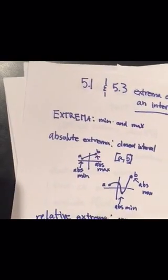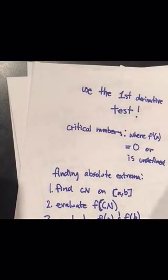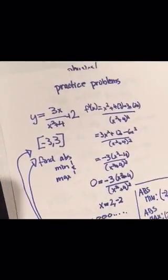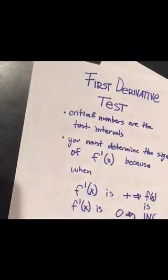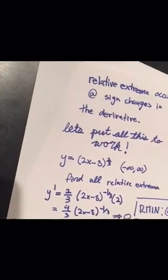Recap: we went over what extrema are, critical numbers, and how to find absolute extrema. We did a problem finding the absolute minimum and absolute maximum, then applied it to a physics problem to show how this can be useful. Finally, we covered the first derivative test and applied it to relative extrema.